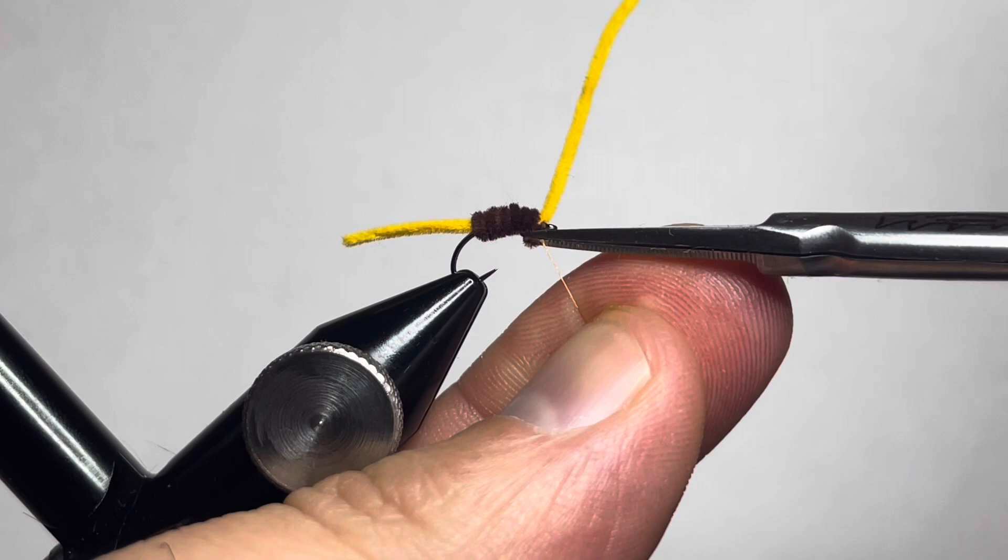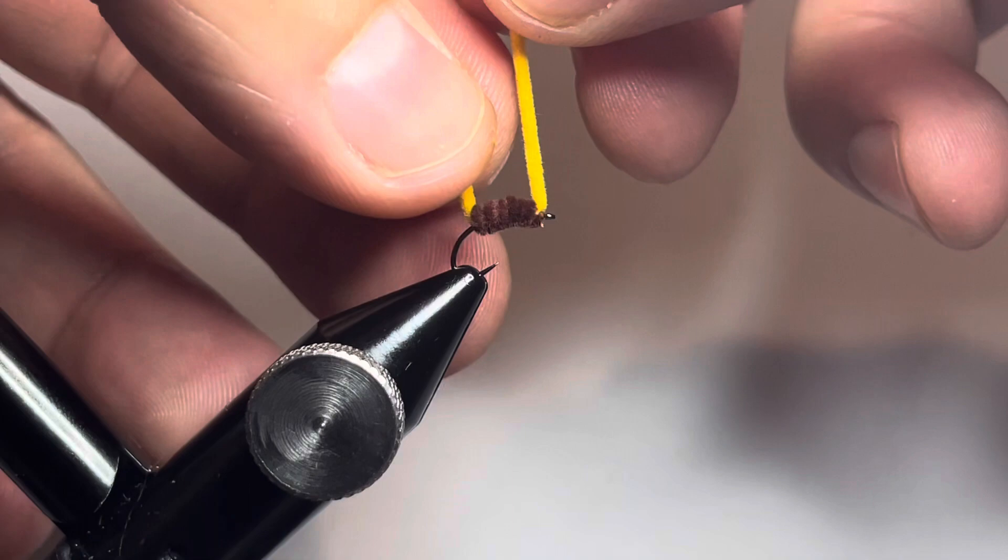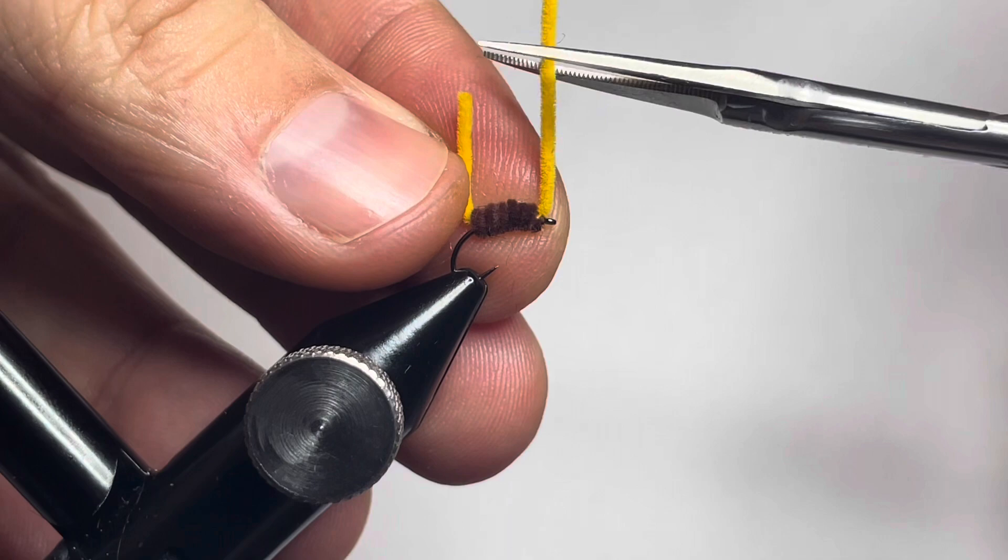To get the front end and the rear end to be approximately the same length, just go ahead and pull those both vertical and use your scissors to trim them to an equal height. To increase the durability on this fly, we're going to take our lighter and singe the tip of the suede chenille.